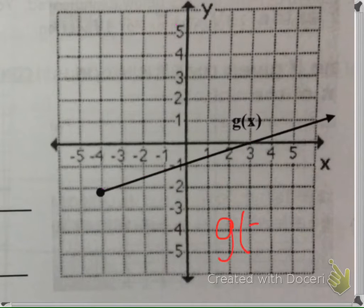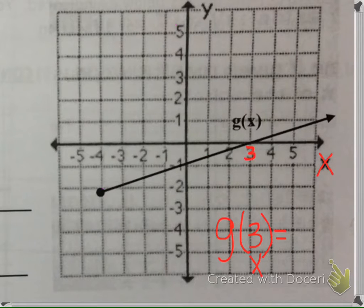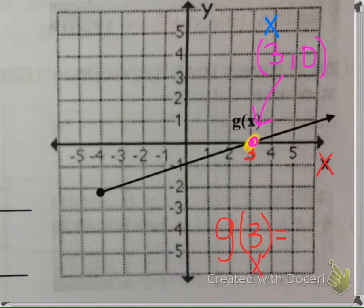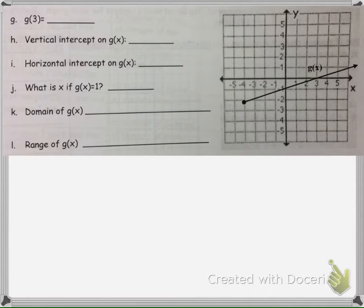We want to know what g of 3 is. So we're going to go to the x axis and go to 3, and we want to know what this point is right there — we want to know what the output is. The ordered pair to this point is (3, 0). So if x is 3, then the y value is 0. So g of 3 is equal to 0.